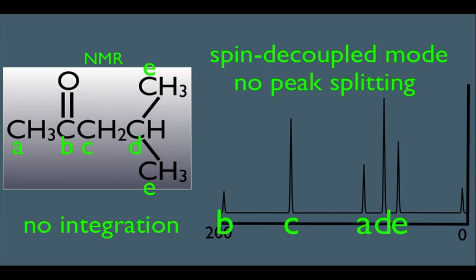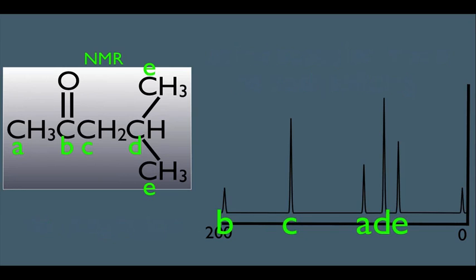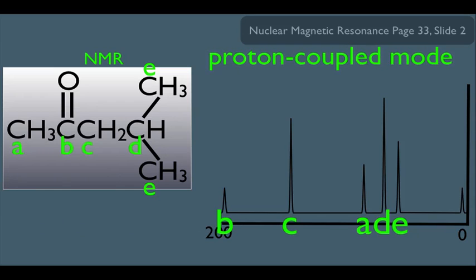Now, let's see what happens if we run our sample and set the mode differently, and this time we're going to set it to proton-coupled mode. In this mode, we actually observe the splitting of signals. But the N plus 1 rule here works a little bit differently. For instance, let me show you how.